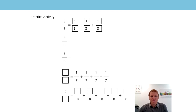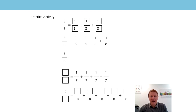Next one down: four eighths. Again we know it's repeated addition of a unit fraction. How many would there be if the numerator is four? There'd be four lots of one-eighth added together. Next one down, let's look at the pattern — still the denominator eight. How many unit fractions will there be? There'll be five, because the numerator is five. So five eighths is equal to five one-eighths.